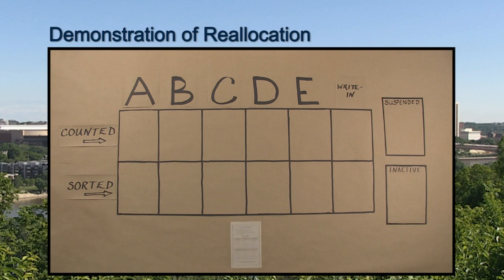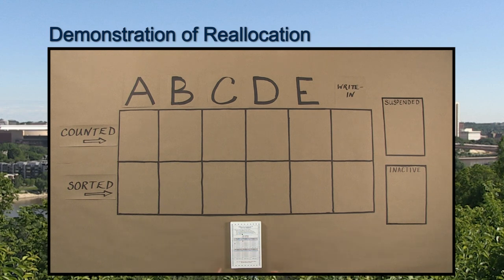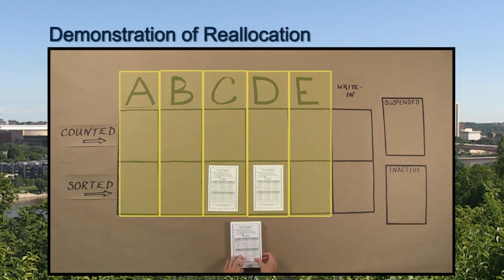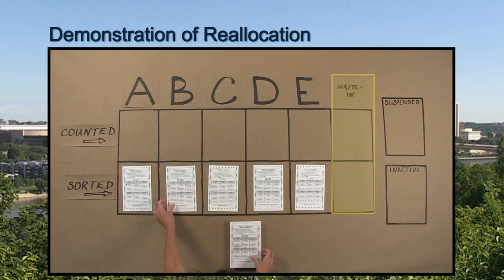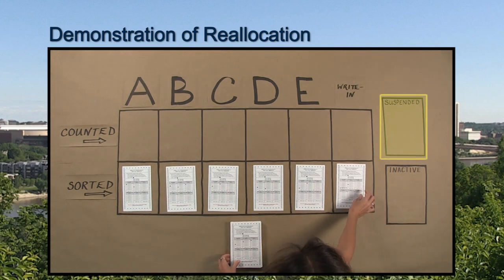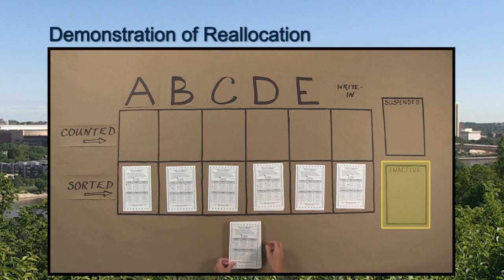In this demonstration, there are 104 total ballots. Ballots are first sorted by their first choice selections. There is a separate pile for each candidate, a pile for write-in votes, a pile for suspended ballots, and a pile for inactive ballots.